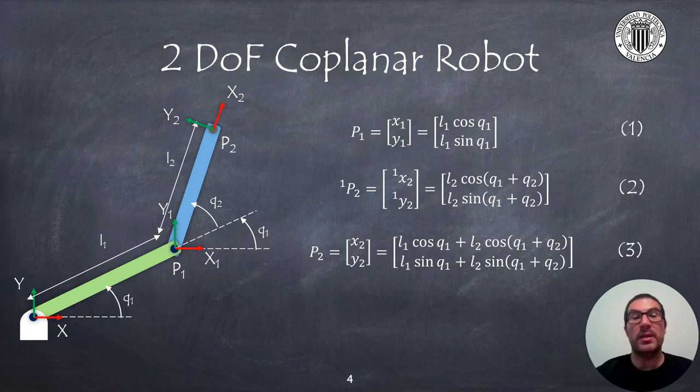Point P1 is actually very easy to compute, given the length of link 1, and the coordinates of P1 are as indicated in equation 1. On the other hand, the position of point P2 with respect to P1, indicated as P2_1, are computed in equation 2. If we add up both coordinates, we can obtain the coordinates of point P2 with respect to the robot base, as indicated in equation 3. Therefore, equation 3 represents the direct or forward kinematic model of the coplanar robot with 2 degrees of freedom, which can be expressed as a formula of the joints of the robot.